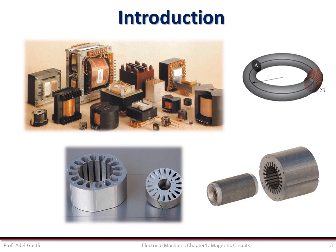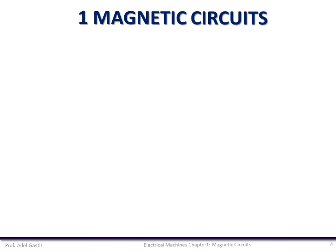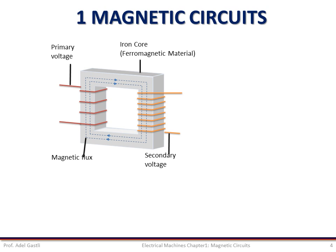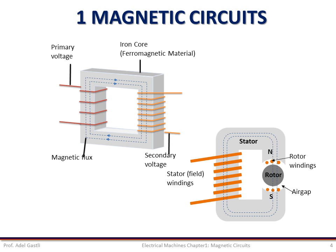In all electrical machines, magnetic materials are used to shape and direct magnetic fields that act as a medium in the energy conversion process. A major advantage is that high flux density can be obtained, which results in large torque or large machine output per unit machine volume. The magnetic circuits may be formed by ferromagnetic materials only, as in transformers, or by ferromagnetic materials in conjunction with an air medium, as in rotating machines. Except in permanent magnet machines, the magnetic field or flux is produced by passing an electric current through coils wound on ferromagnetic materials.